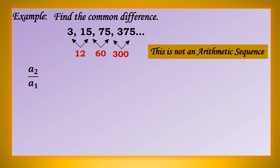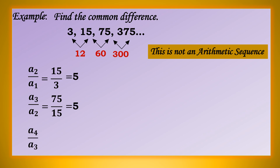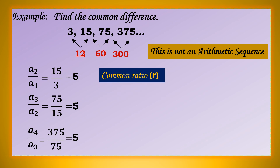Let us try dividing the second term by the first term. The second term is 15 and the first term is 3. So we have 15 divided by 3, which gives us 5. Divide the third term by the second term: 75 divided by 15 is 5. If you notice, they have the same quotient — the quotient is 5.